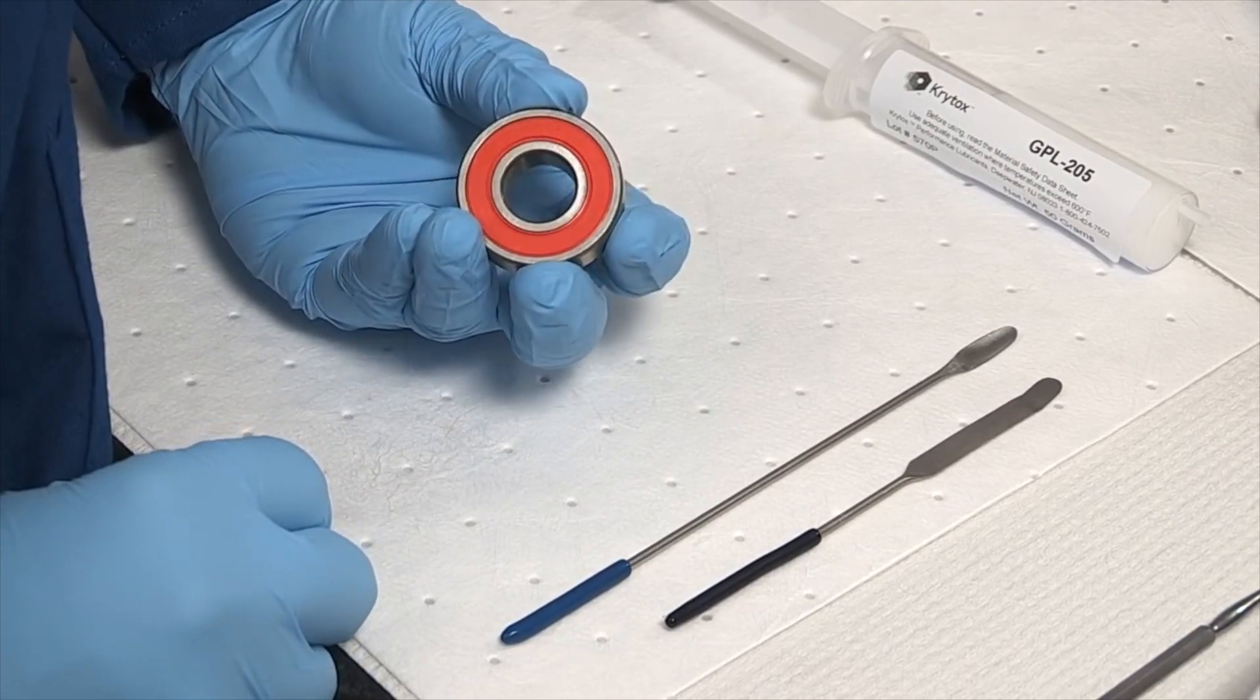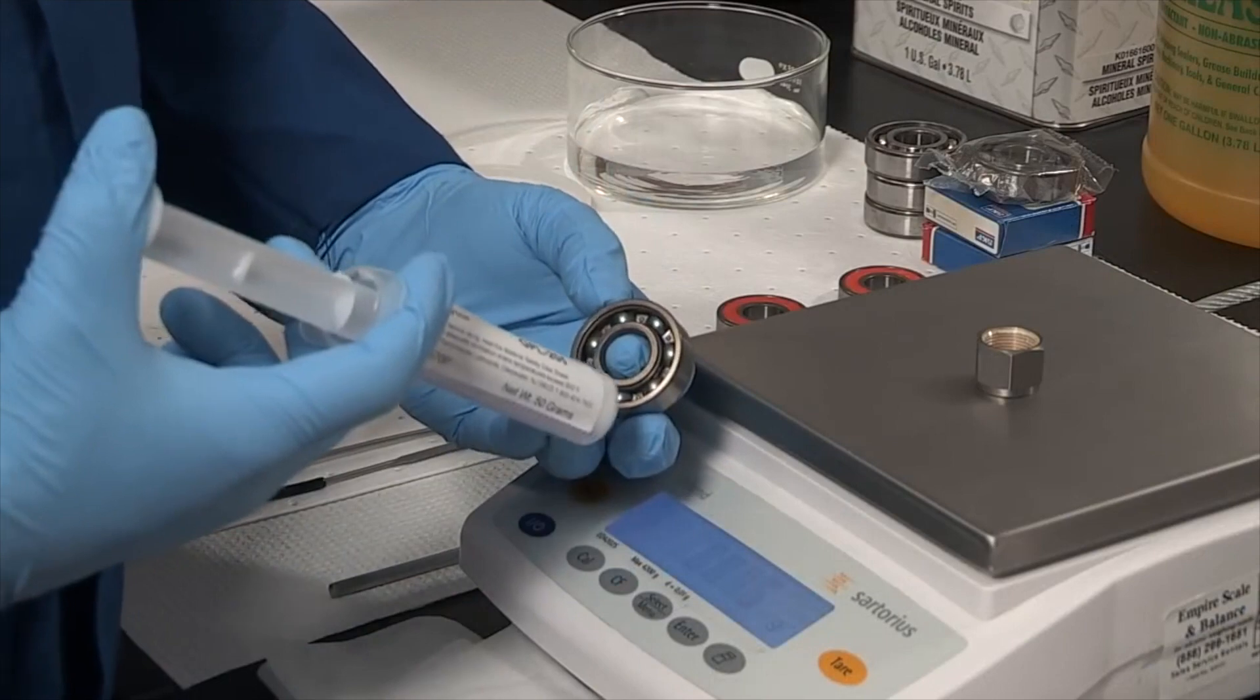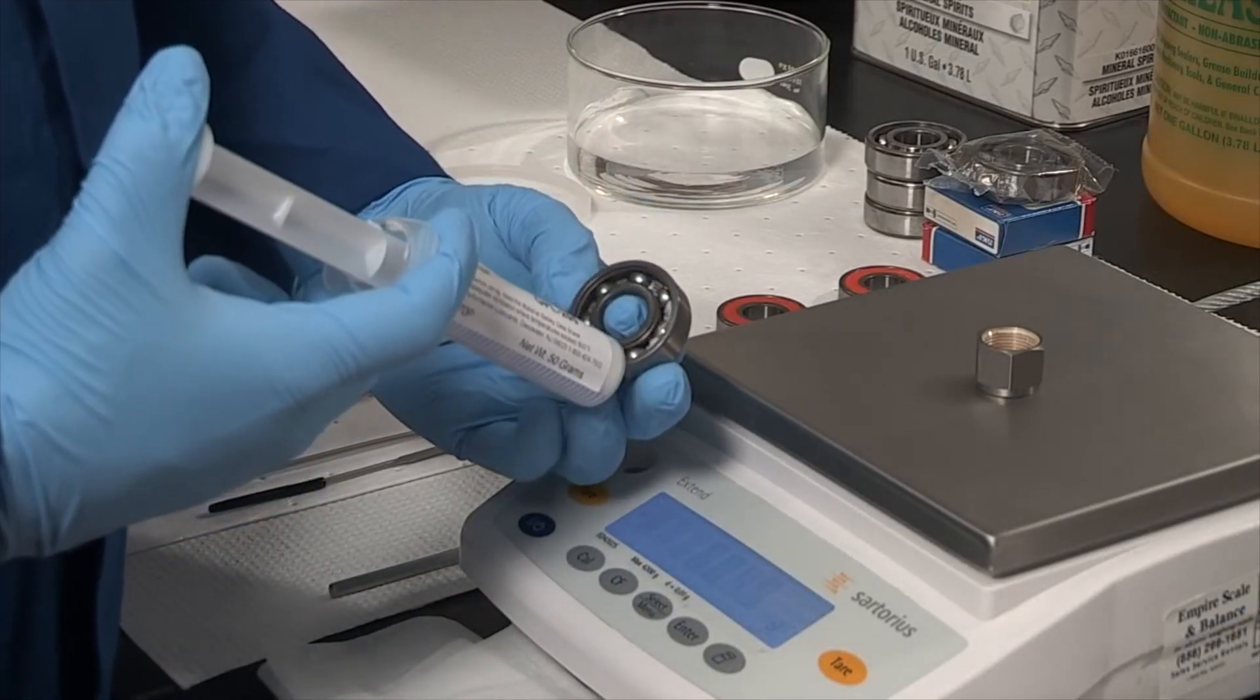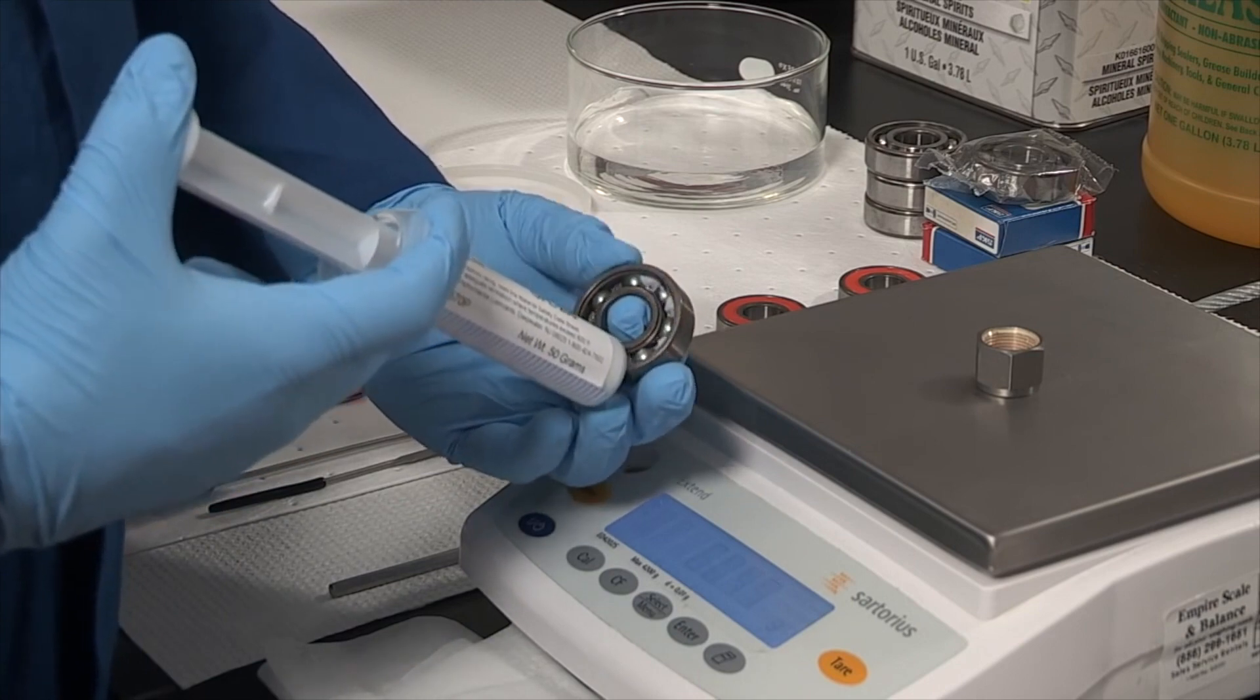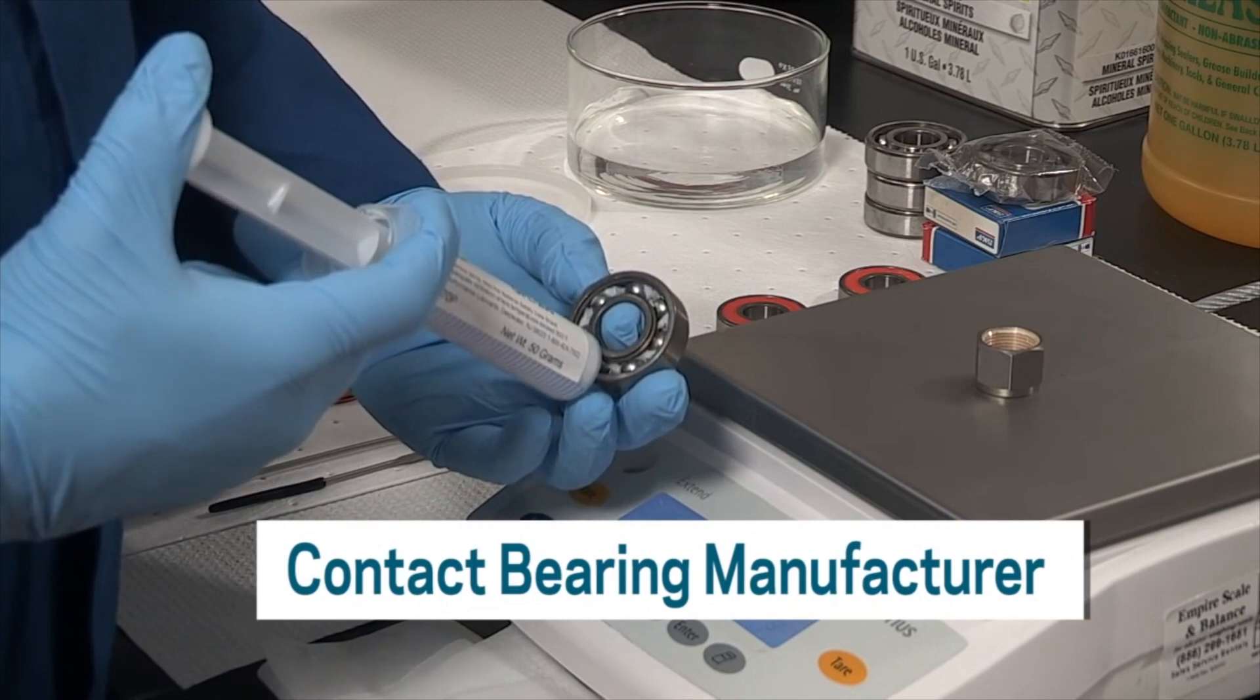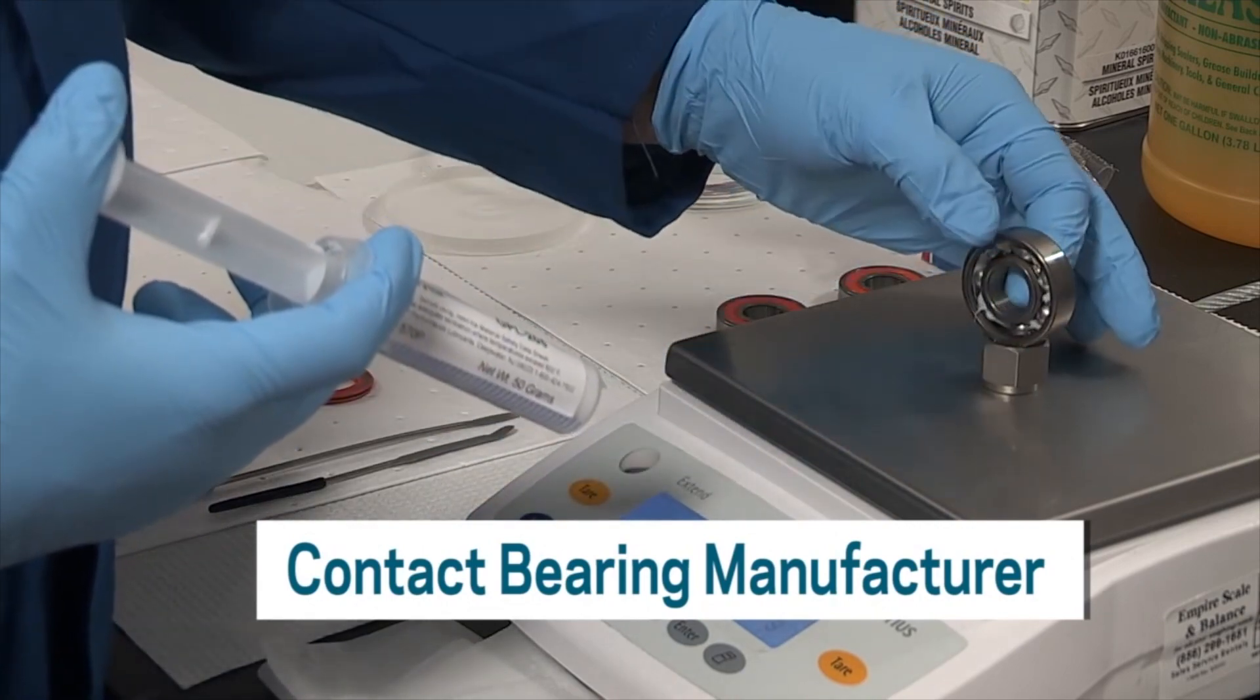To avoid failure, determine the proper amount of grease. Since Krytox grease is heavier than hydrocarbon lubricants, its higher density must be considered when determining the fill quantity by weight. Consult your bearing manufacturer for determining the proper grease volume or weight for the application and operating speed.